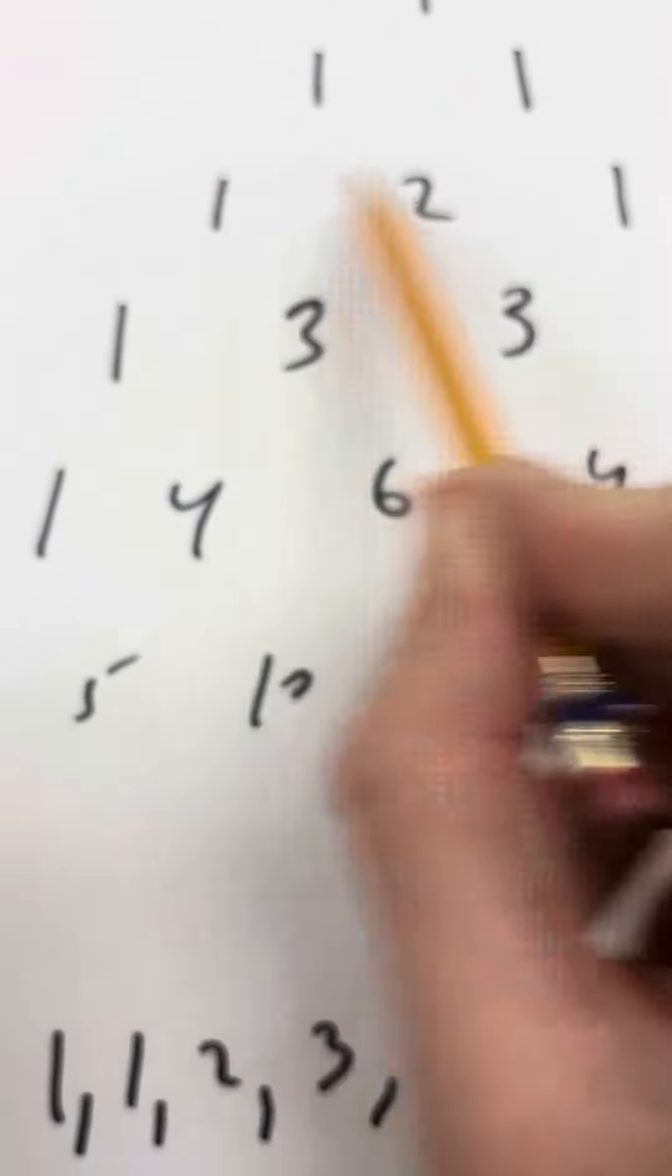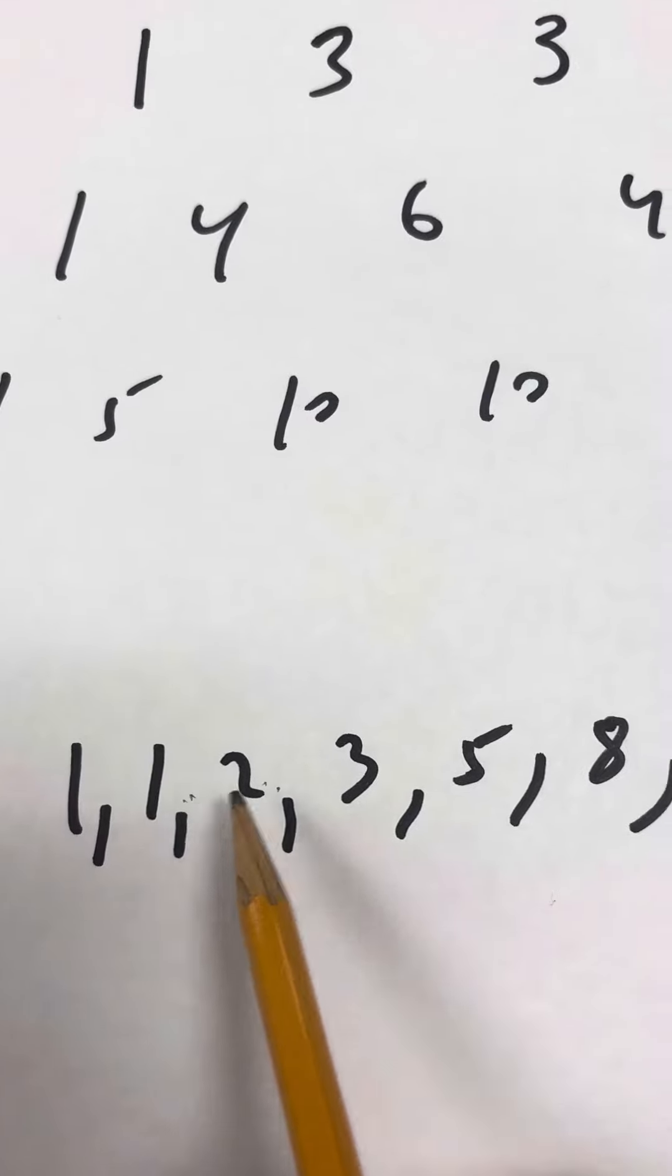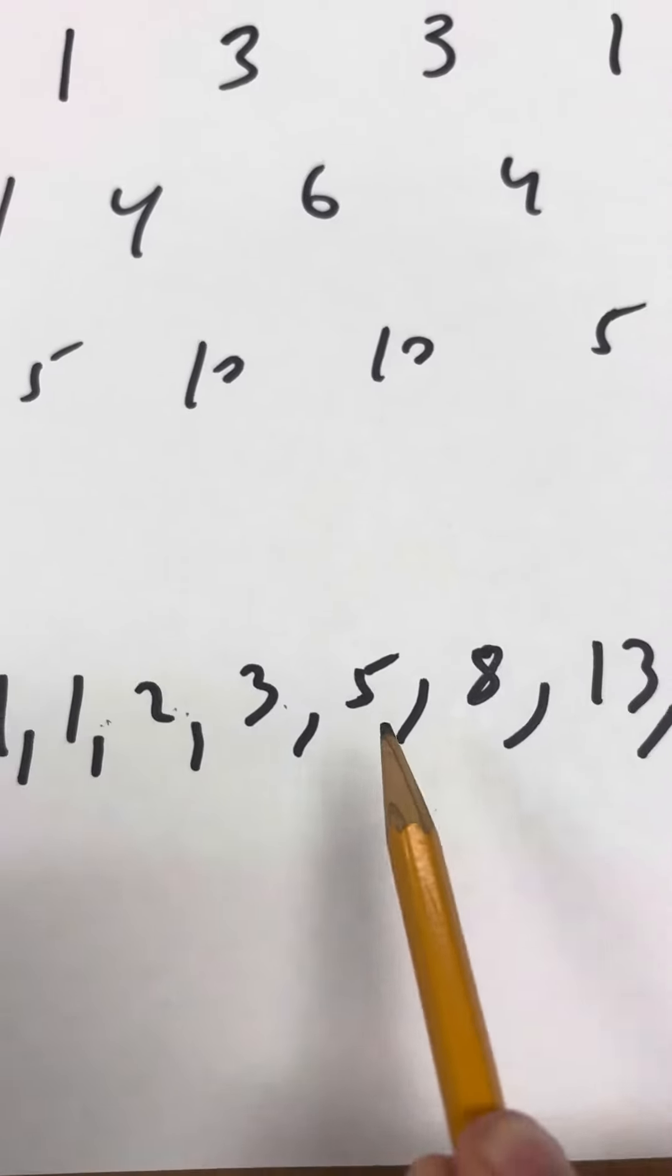The Fibonacci sequence starts with 1, 1, and then you add the two numbers before it to get the next number, and you keep going.